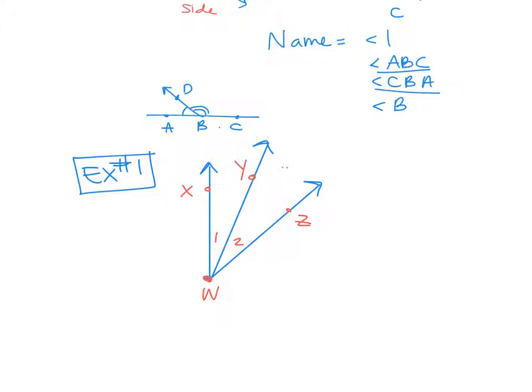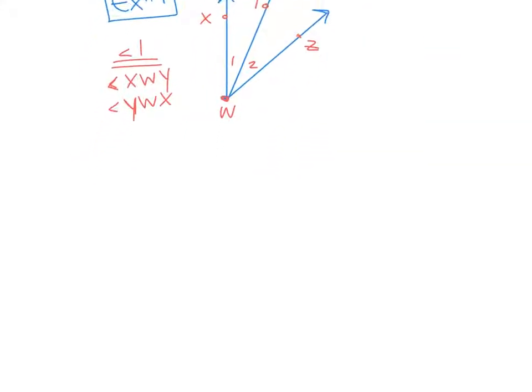I want to know two other ways that you can name angle one. So angle one has two other possible names right now. Can you tell me what one of them is? X, W, Y. And you always put the angle symbol in front of it. So angle X, W, Y would be one of the names. What's the other name? You can't call it angle W. Why can't you call it angle W? There's two angles there, right? So we can't call it angle W. We can call it Y, W, X. So just make sure if there's multiple angles there, don't use the one letter. You've got to do it the other way.